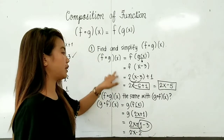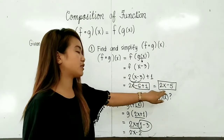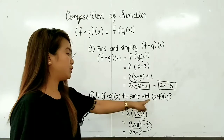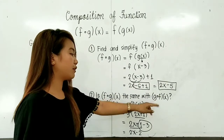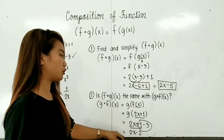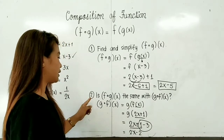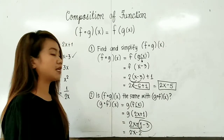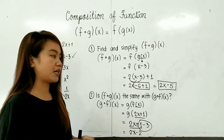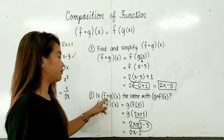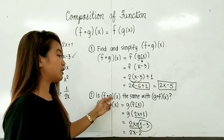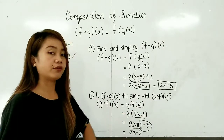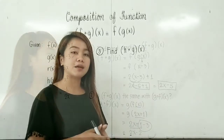Now, f composed of g of x equals 2x minus 5. However, g composed of f of x equals 2x minus 2. Therefore, the answer for number 2 is they are not the same. So f composed of g of x is different from g composed of f of x.